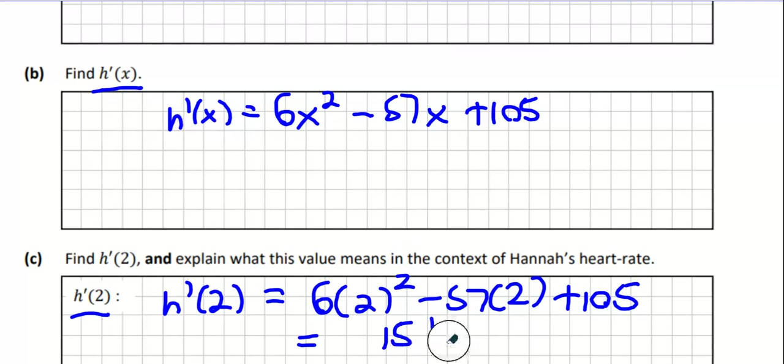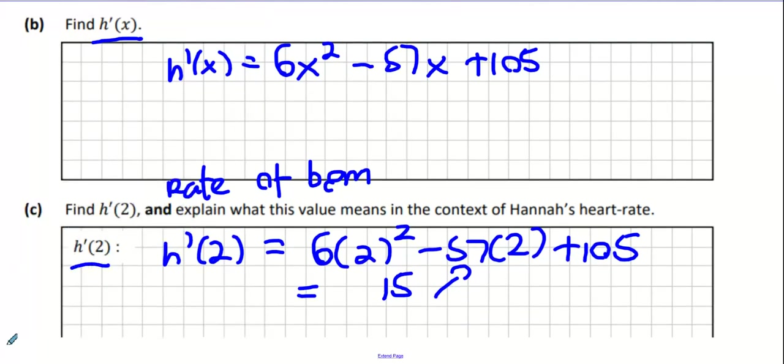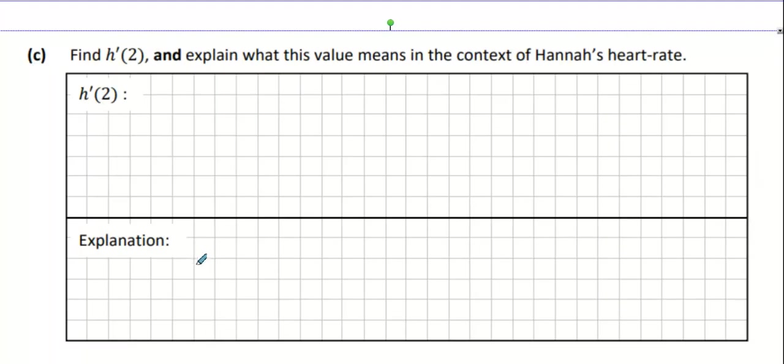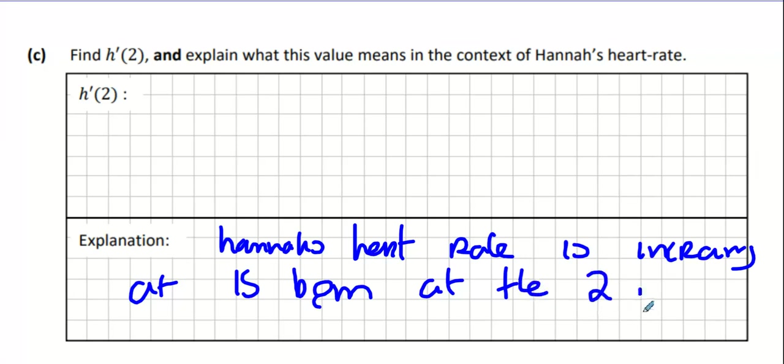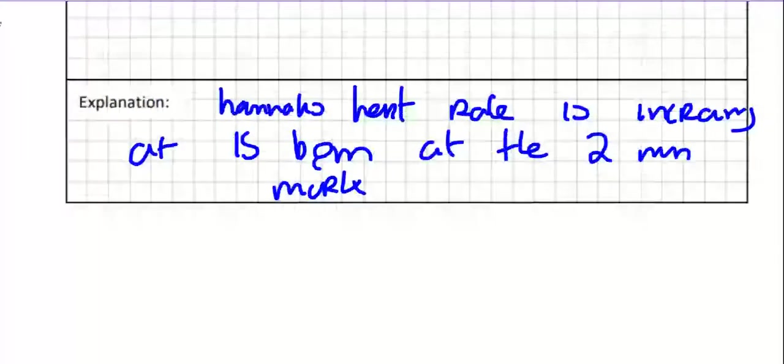Now what does this mean at this point in time? Remember the first derivative is the rate and it's the rate of beats per minute. So the rate of beats per minute, because the slope is going upwards at 15, it means that your heart rate is currently rising at 15 beats per minute. Hannah's heart rate is increasing at 15 beats per minute at the 2 minute mark. So her heartbeat is on the way up, it's increasing after 2 minutes.